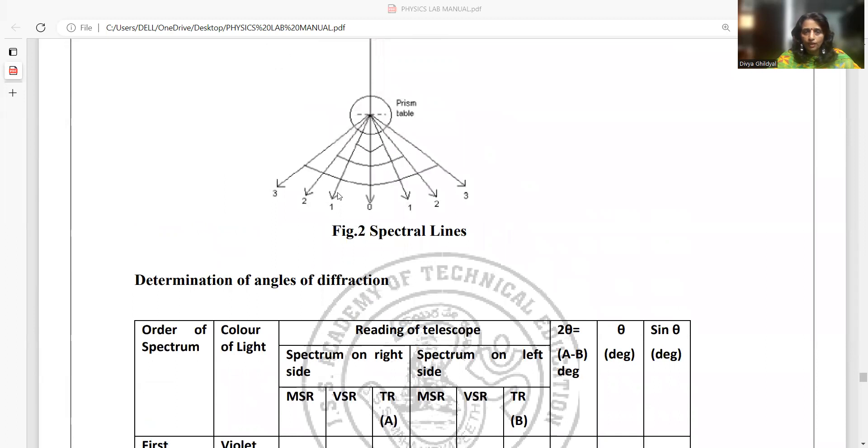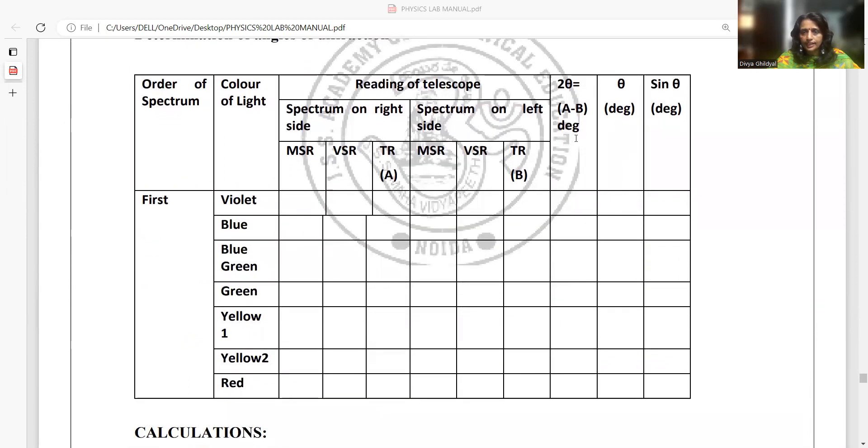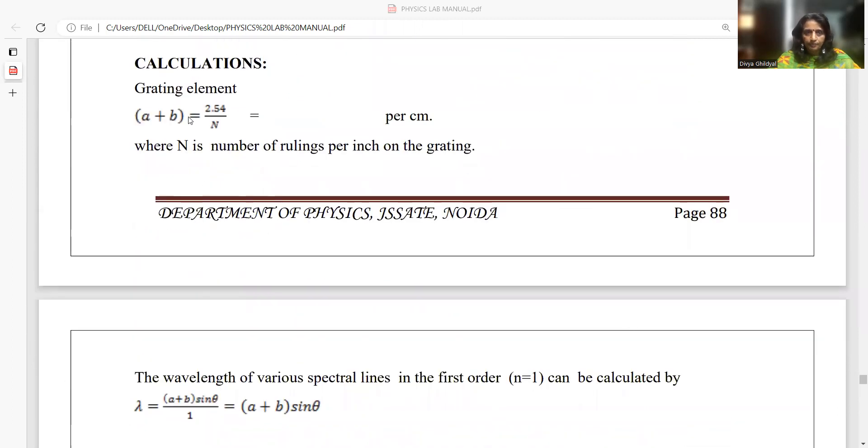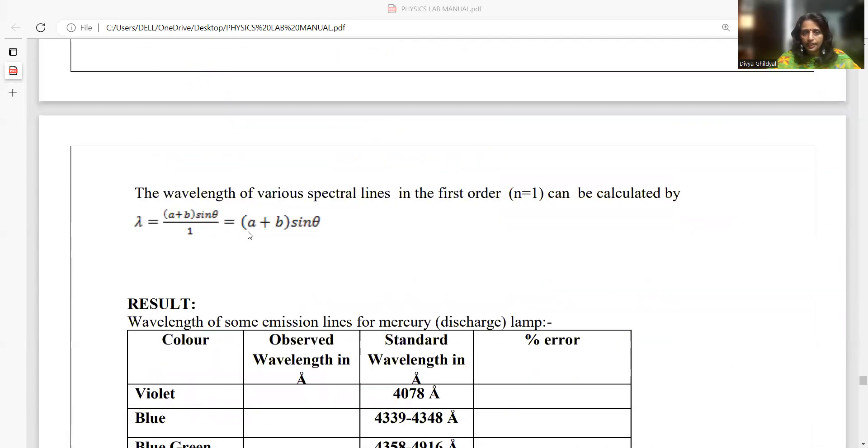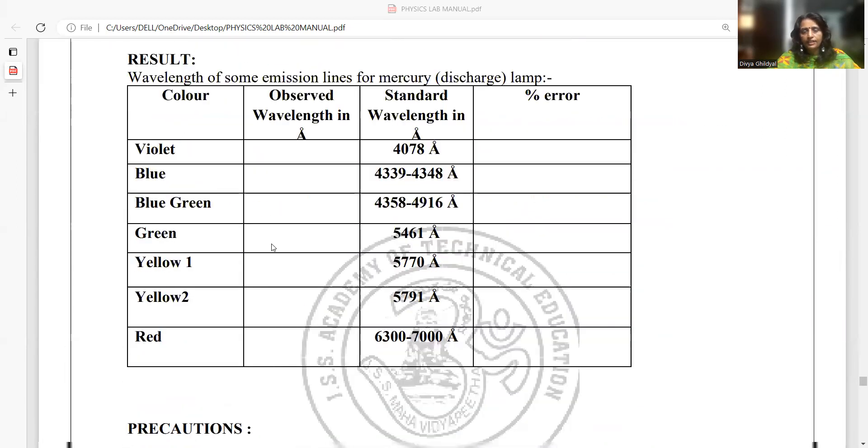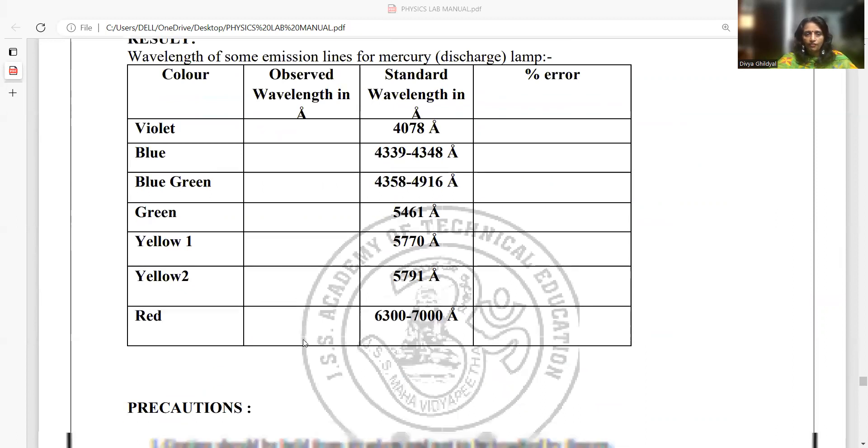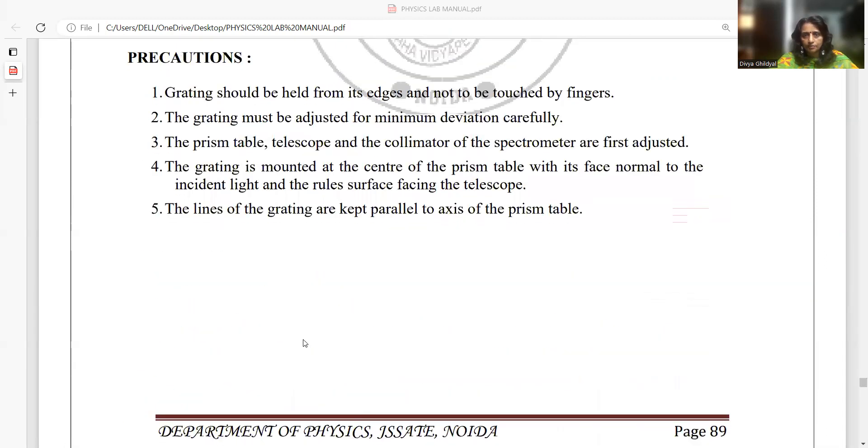Violet color, I will observe on both sides of my principal maxima spectra. I will subtract the total reading of violet color on either side. I will get 2θ. I will divide it. I will get θ. I will take sine of it and I will get sin θ. I will put these values in this formula where I have found A + B and I will get the answer for wavelength, whatever color is visible to me.